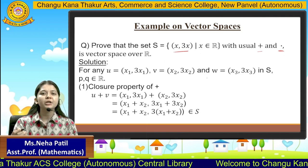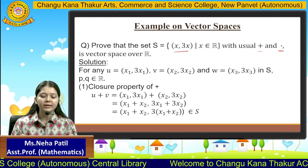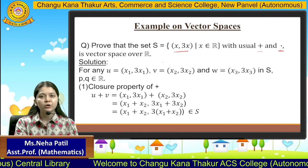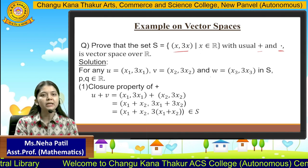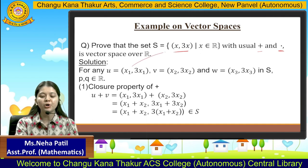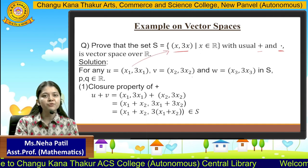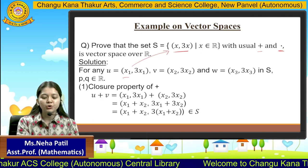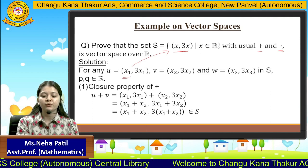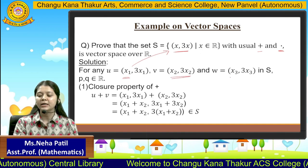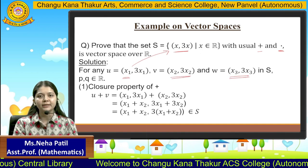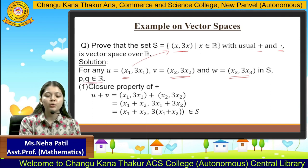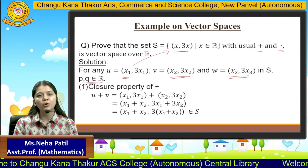We will satisfy all the 10 properties one by one. For that, we need three elements belonging to that particular set. Let's take u, v, and w. Since these are belonging to the set, they should be of the form (x, 3x). Since x is a variable, you can change the variables. So I am taking u = (x1, 3x1), v = (x2, 3x2), w = (x3, 3x3) belonging to the set S. And p and q are scalars belonging to the real numbers.